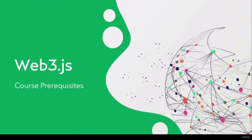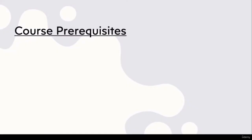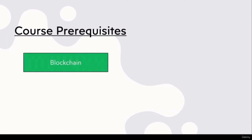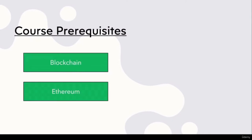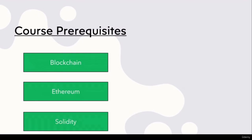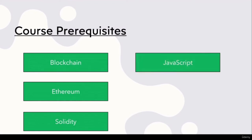The next thing we are going to talk about is web3.js course prerequisites — what things you should have an idea about before starting this course. The first prerequisite is blockchain. You should have a clear idea about blockchain and its basics, including Ethereum and how it works. You should also have an idea about Solidity, because we make smart contracts using Solidity and deploy them on the Ethereum blockchain. In this course we will see how to compile our smart contract using Solidity and then deploy it. Additionally, you should have some idea about JavaScript — basic JavaScript at minimum, though advanced JavaScript knowledge will be better, as it will be used during compilation and other processes.